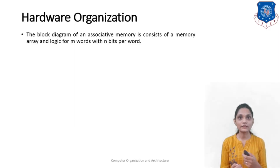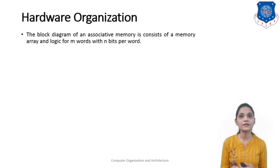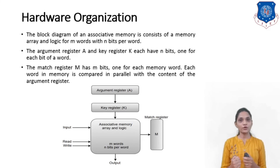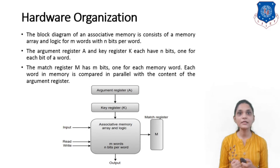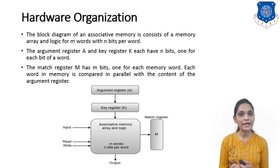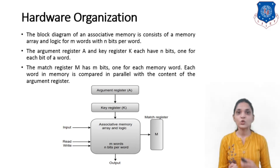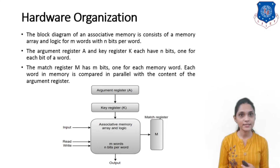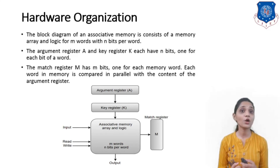The block diagram of associative memory consists of a memory array and logic for M words with N bits per word. Here, A is the argument register and K is the key register, both having N bits. The memory is of size M words, each consisting of N bits, so the memory is M×N. We also have a match register consisting of M bits — one bit per word in memory. Each word in memory is compared in parallel with the contents of the argument register, and the corresponding bit in the match register is set or reset accordingly.